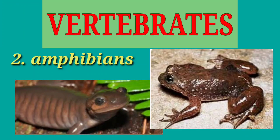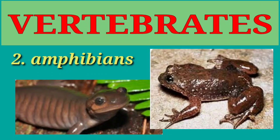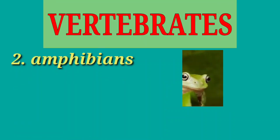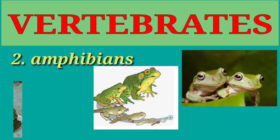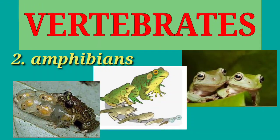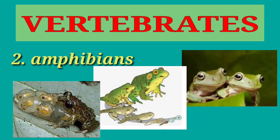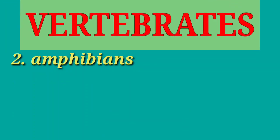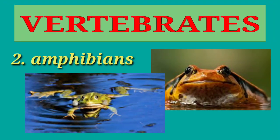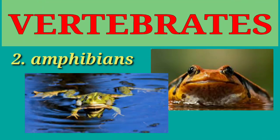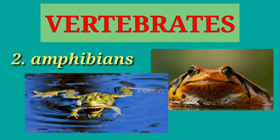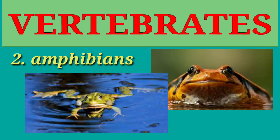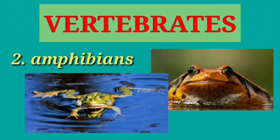Amphibians have strong legs for walking, leaping, and swimming. They reproduce sexually, and fertilization and development occur outside the body. Amphibians are cold-blooded animals, meaning their body temperature changes with the temperature of the surrounding area.